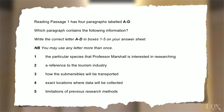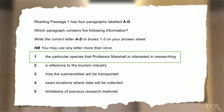Now look at the questions. You need to read the question and then go to the text and find the paragraph or section that contains this information. Let's try to do question one. We need to find the particular species that the researcher is interested in — the particular species.